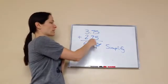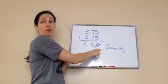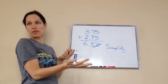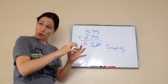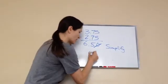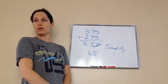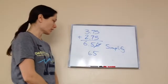3.75 plus 2.75 equals 6.50. And you can leave it at 6.50 and that's fine. But if you want to bring it to the simplest form, you would take away your zero to show that it's 6.5.